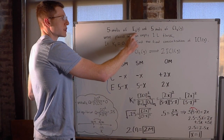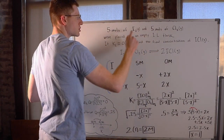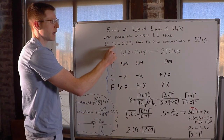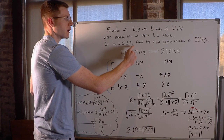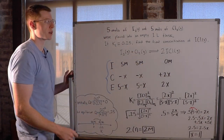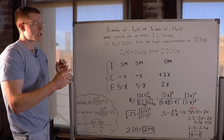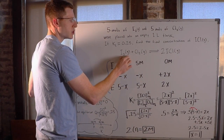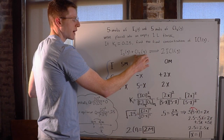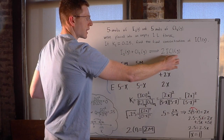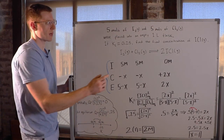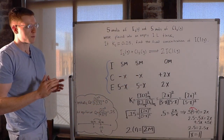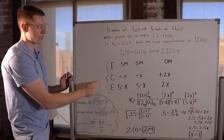5 moles of I₂ gas were mixed with 5 moles of Cl₂ gas in an empty 1 liter flask. If the K, or equilibrium constant, is 0.25, find the final concentration of ICl gas. I₂ is going to combine with Cl₂ gas to be in equilibrium with ICl gas, and I had to balance the equation by adding a 2 in front of the ICl.